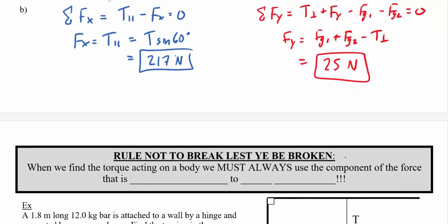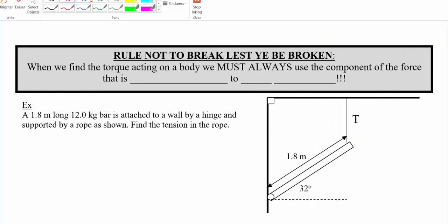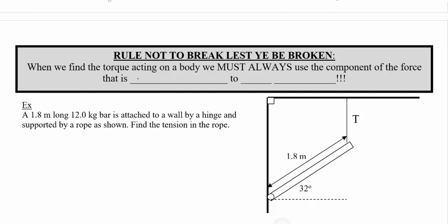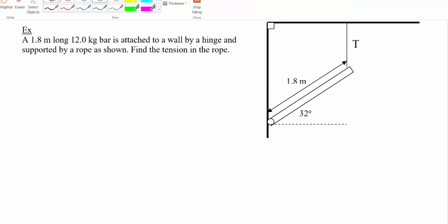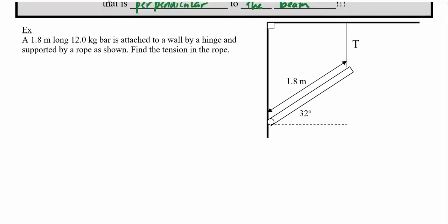The key rule to keep in mind when solving torque problems where forces aren't at right angles: you must always use the component of force that is perpendicular to the beam or whatever is rotating. Now let's look at a new example: a 1.8-meter-long, 12-kilogram bar attached to a wall by a hinge and supported by a rope. Find the tension in the rope, given the beam makes 32 degrees with the horizontal.